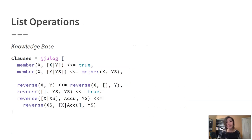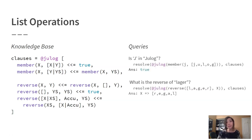We can also define list semantics using Julog. Like in Lisp, Prolog stores lists as recursive data structures with heads and tails, and Julog does the same. Using this, we can define relations like list membership or list reversal, and use queries with free variables to perform list operations. What is the reverse of 'lager'? Regal, it turns out.